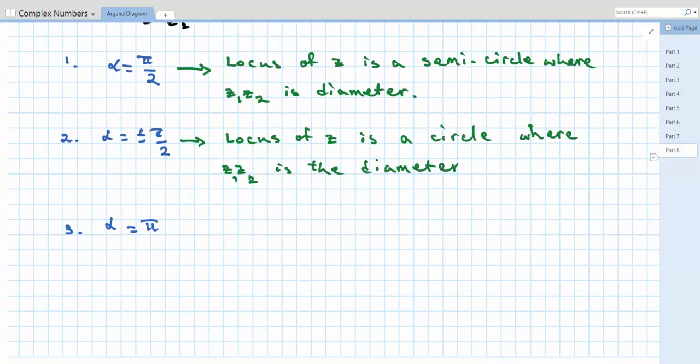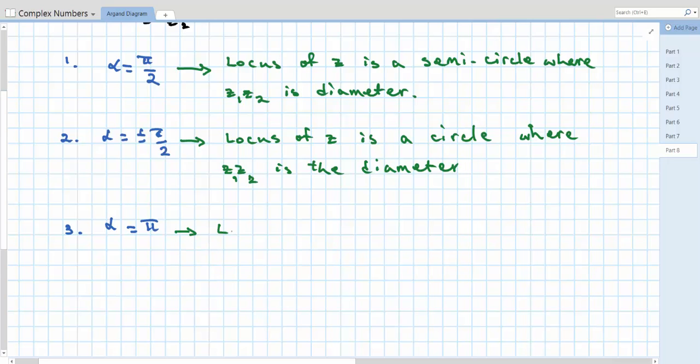So alpha equals π results in an interval which lies between z1 and z2.